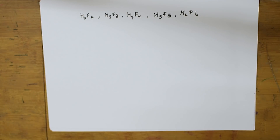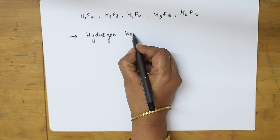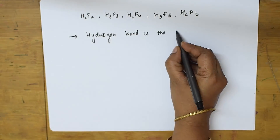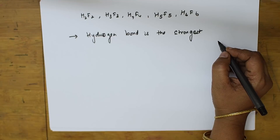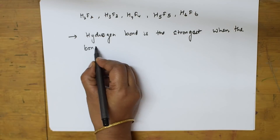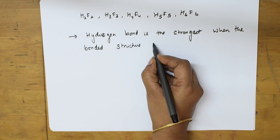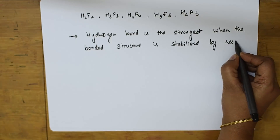Among the different types of bonds, hydrogen bonding is the strongest bond because the hydrogen bonding structure is stabilized by resonance. Remember that hydrogen bonding is strongest when the bonded structure is stabilized by resonance.